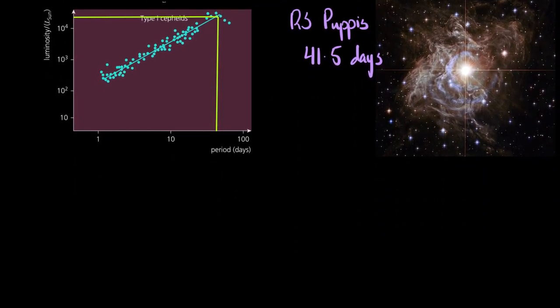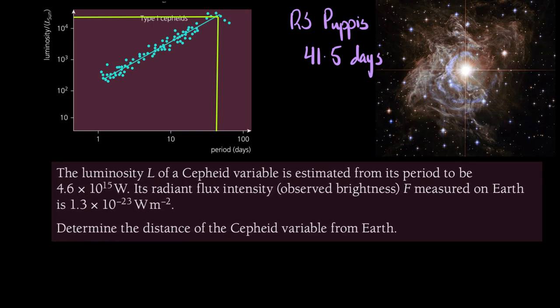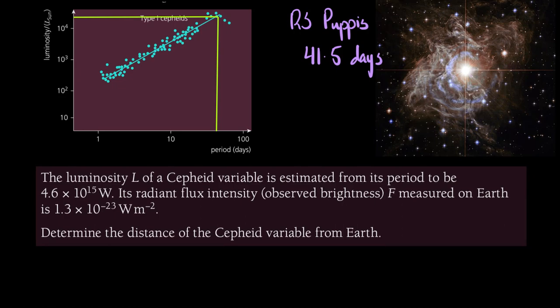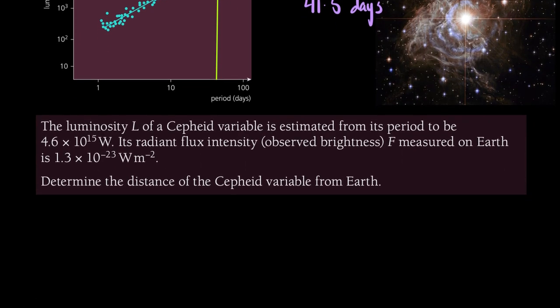What this question says is: the luminosity L of a Cepheid variable is estimated from its period to be 4.6×10¹⁵ W. This is exactly the type of question you would get in your exams. You are not required to know how you get the luminosity of a Cepheid variable from its period. Its radiant flux intensity - we know this is capital F - is measured on Earth as 1.3×10⁻²³ W/m². If you want to find the distance, we simply use this relationship that F, the radiant flux intensity, is given by this expression: L/(4πd²).